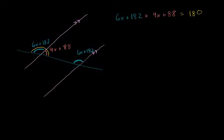Now we simplify. 6x plus 9x gives us 15x. Then 182 plus 88—182 plus 8 gets us to 190, and adding another 80 gets us to 270. So 15x plus 270 equals 180.